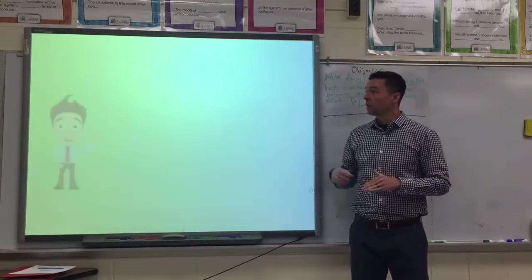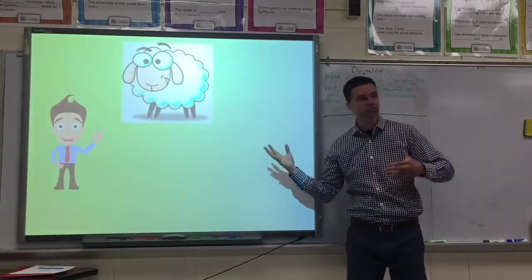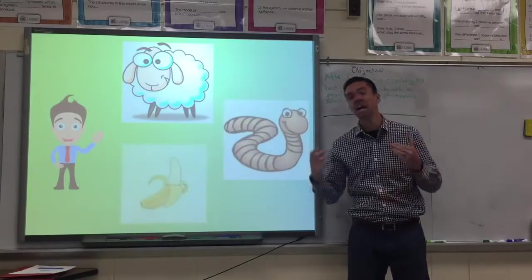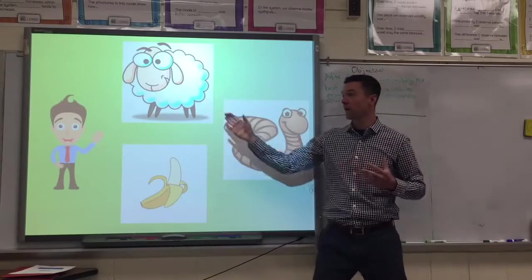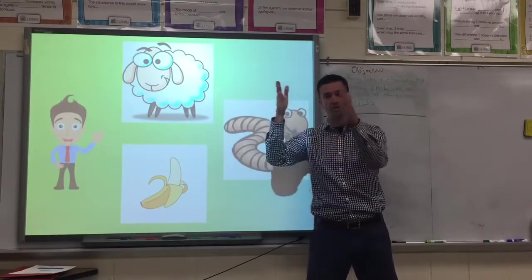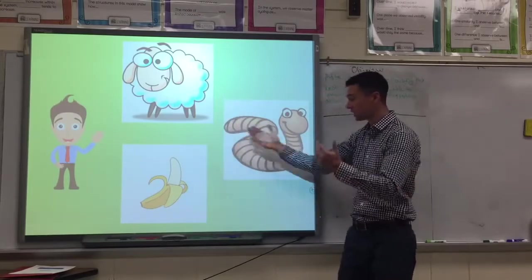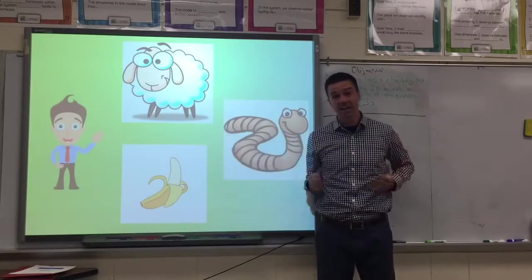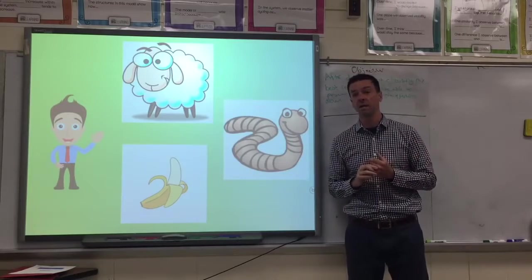What makes us us is our DNA. But a sheep has DNA, a worm has DNA, and a banana has DNA. The reason that we and the sheep look different, act different, and have different features is literally just because we both have strips of DNA and our DNA is different. Our DNA says make us a human, their DNA says make us sheep, and this DNA says make us a banana.